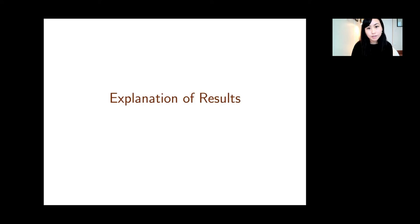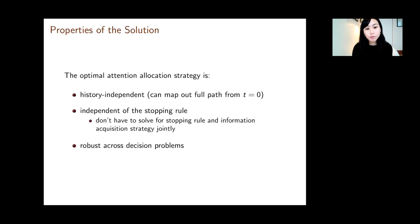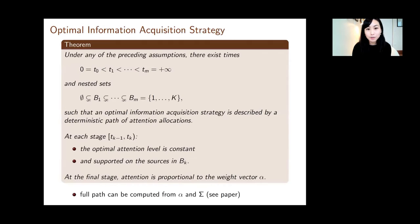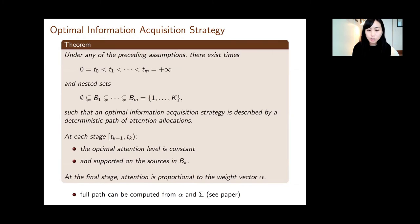There was a question about the difference between forward-looking versus myopic agents and how this affects the solution. One thing I didn't highlight is that this is also going to be the myopic solution. Whenever our assumptions hold, myopically acquiring information — acquiring information in the way that maximally reduces uncertainty immediately about the payoff-relevant state — turns out to be the optimal forward-looking solution as well.